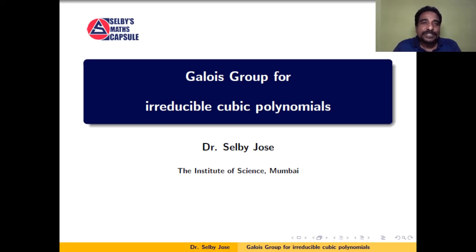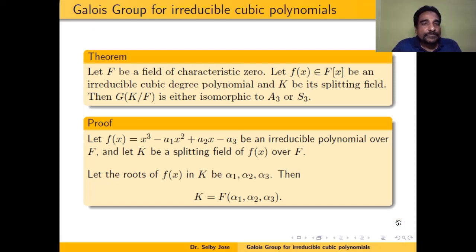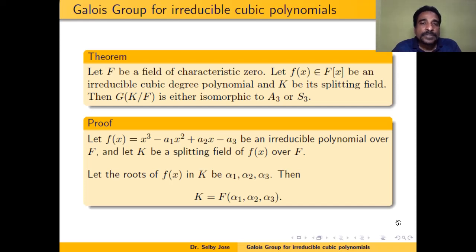In this session we discuss the Galois group for irreducible cubic degree polynomials. The theorem states that if f(x) is an irreducible cubic degree polynomial over a field of characteristic 0 and K is the splitting field of f(x), then the Galois group of K over F is either isomorphic to A3 or isomorphic to S3.